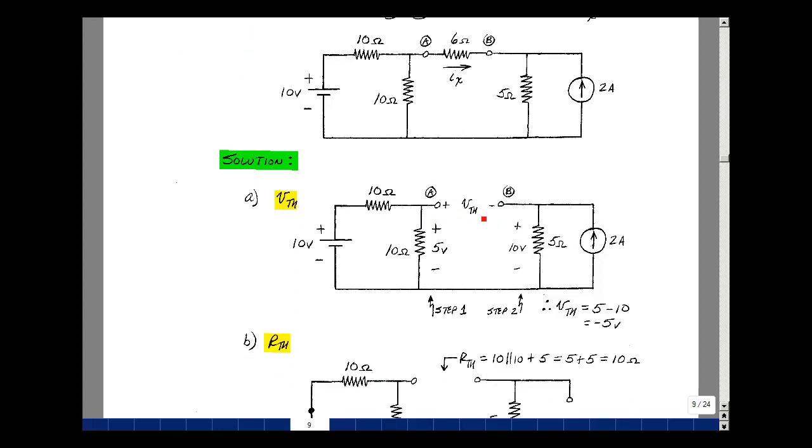Because there's no current here, the current in the 10 ohm resistor is the same as the current in this 10 ohm resistor, so you have a voltage divider of a half. Because of the open circuit here, all this current is going to flow into the 5 ohm resistor and create a voltage of 10 volts.